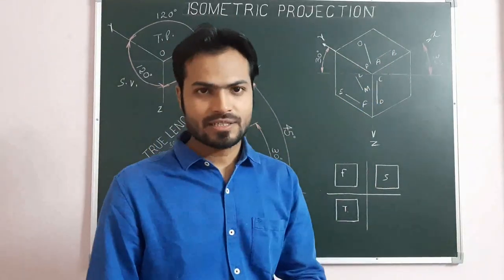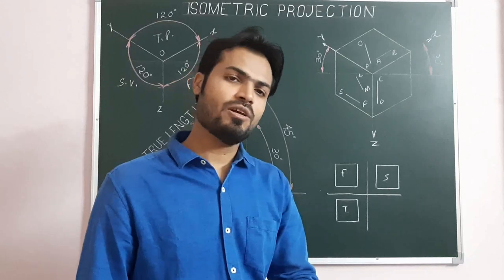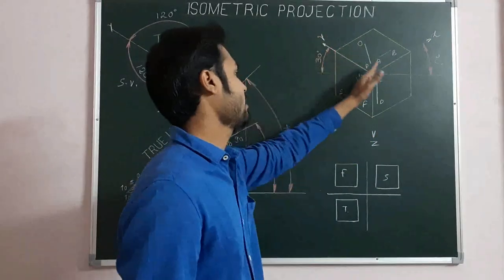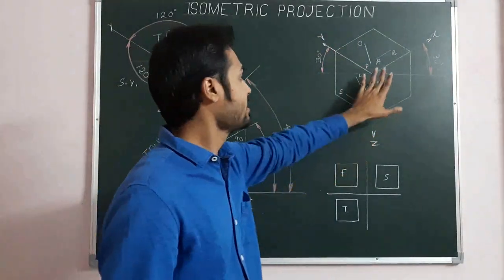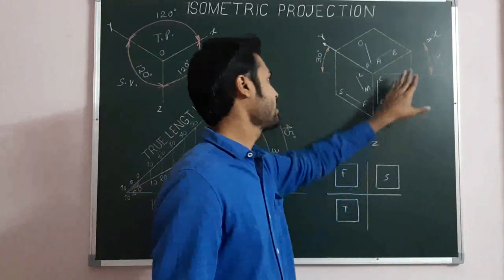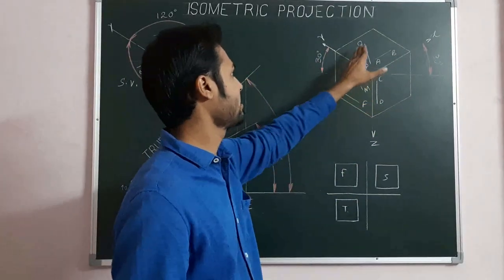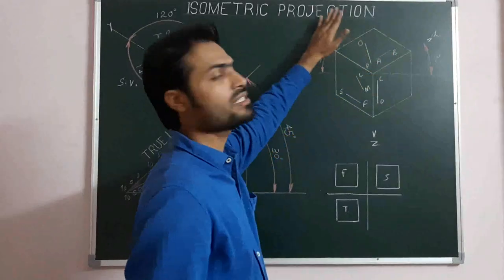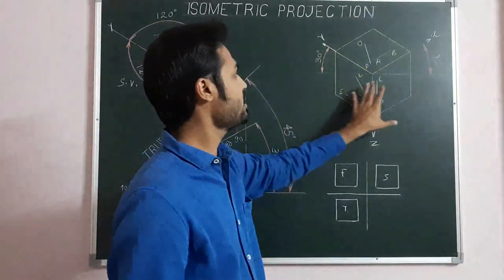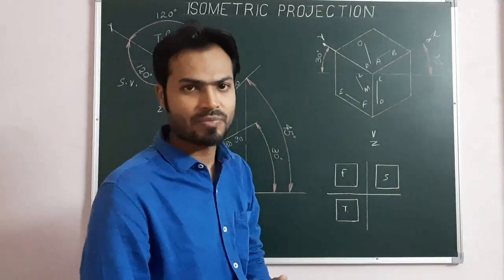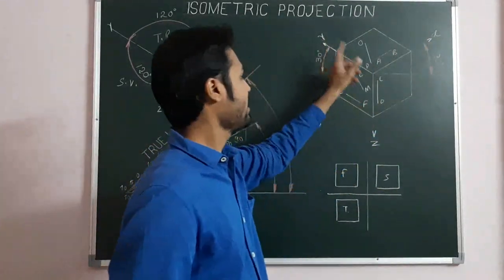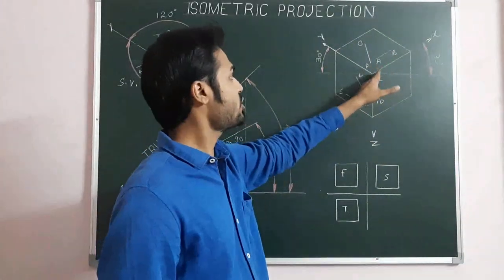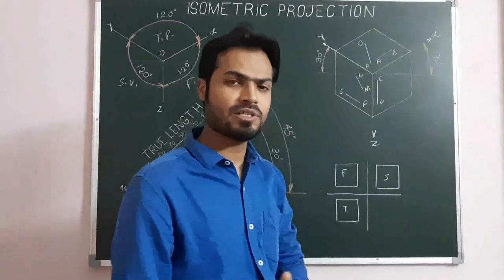Now let me explain isometric lines, isometric planes, non-isometric lines, and isometric axes. These three axes are known as isometric axes. Under these axes, we have certain planes — first plane, second plane, third plane — giving us a total of six planes. These three planes are known as isometric planes, and any plane parallel to these reference planes is also known as an isometric plane. Similarly, any line along the solid or along any plane which is parallel to any of the isometric axes is known as an isometric line.